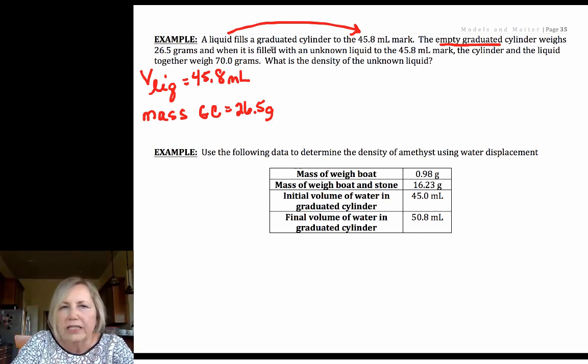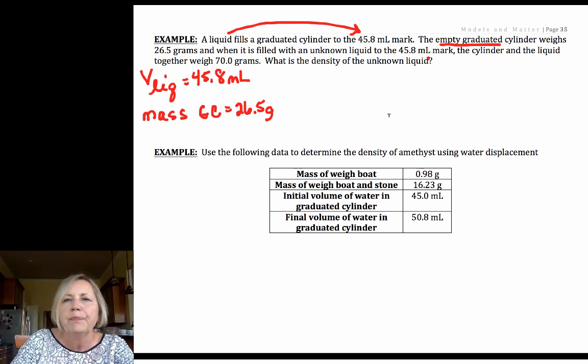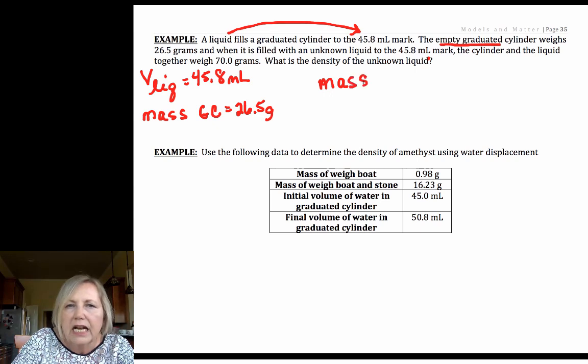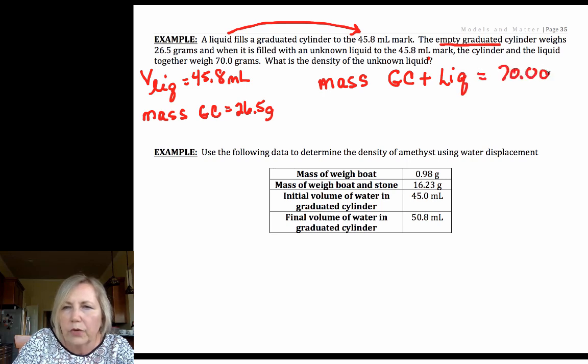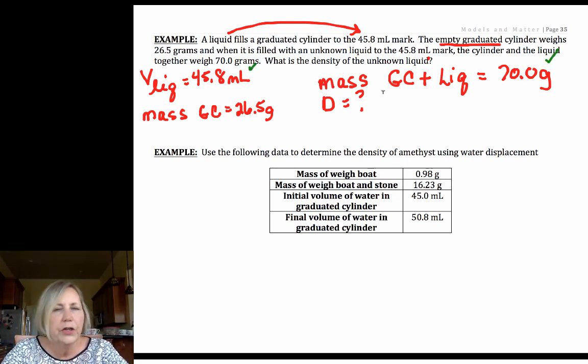Then it just reiterates when it's filled with the unknown liquid to the 45.8 milliliter mark. Well, we already knew that. Then it says that the mass of my graduated cylinder plus my liquid is equal to 70.0 grams. Then it asks us what is the density of my unknown. Now I've listed my givens, check your units. Grams and milliliters are very reasonable for density, so we don't have to change them.